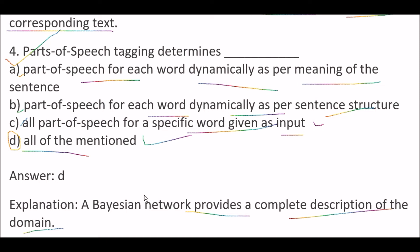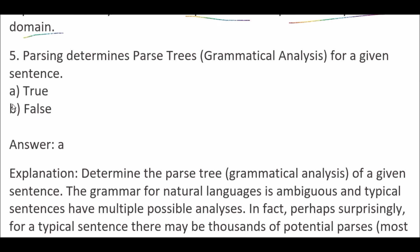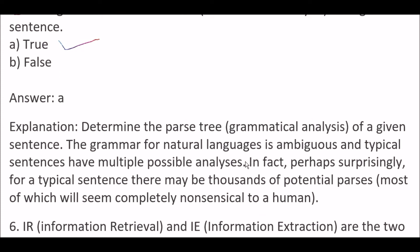Next question: parsing determines a parse tree, meaning grammatical analysis for a given sentence — is true or false? The answer is true. The grammar for natural language is ambiguous and typical sentences have multiple possible analyses. In fact, for a typical sentence there may be thousands of potential parses, most of which will seem completely nonsensical to humans.